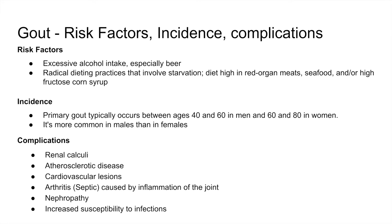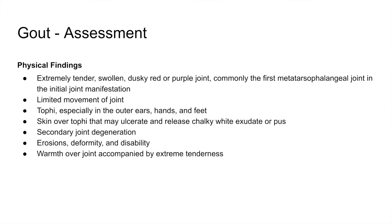Complications of gout include renal calculi, atherosclerotic diseases, cardiovascular lesions, arthritis from joint inflammation, nephropathy, and increased susceptibility to infections. Assessment findings include tender, swollen, dusky red or purple joints — commonly the first metatarsophalangeal joint. Due to inflammation, there is limited joint movement. Tophi formation may occur, with tophi over the skin that can ulcerate and release chalky white exudate — the body's way of releasing uric acid buildup. Secondary joint degeneration, deformity, disability, and warmth from the inflammatory process may also be present.